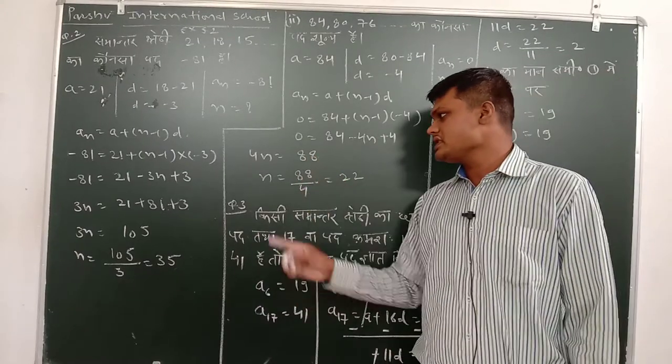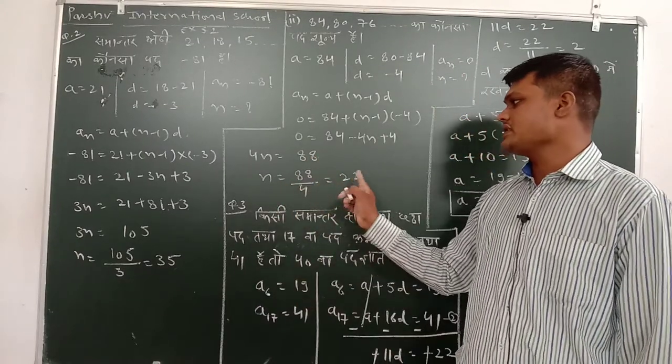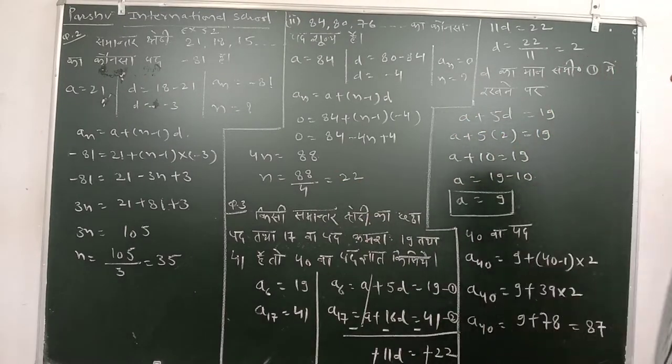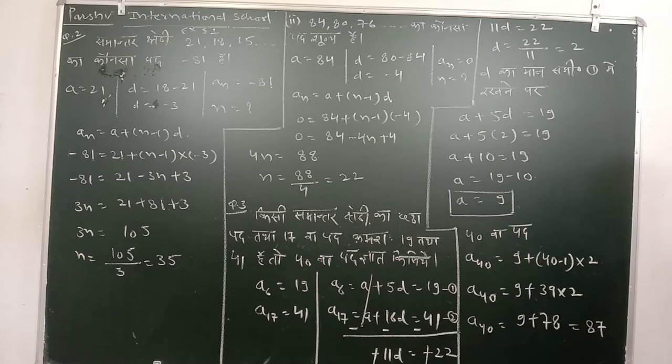To 4n barabar 88, to n barabar ke kya hoga ye? 88 bata 4 barabar 22. Matlab 22 vi pat ke upar maan shunya hoga.